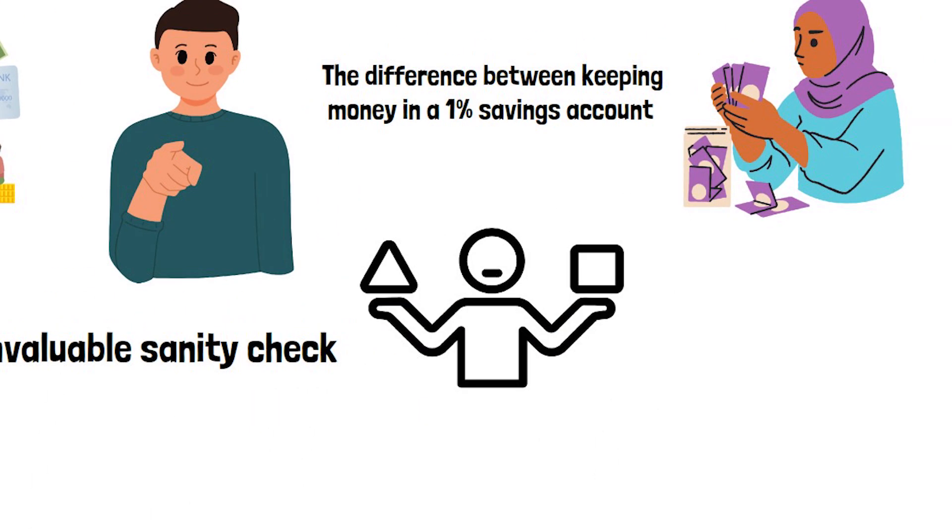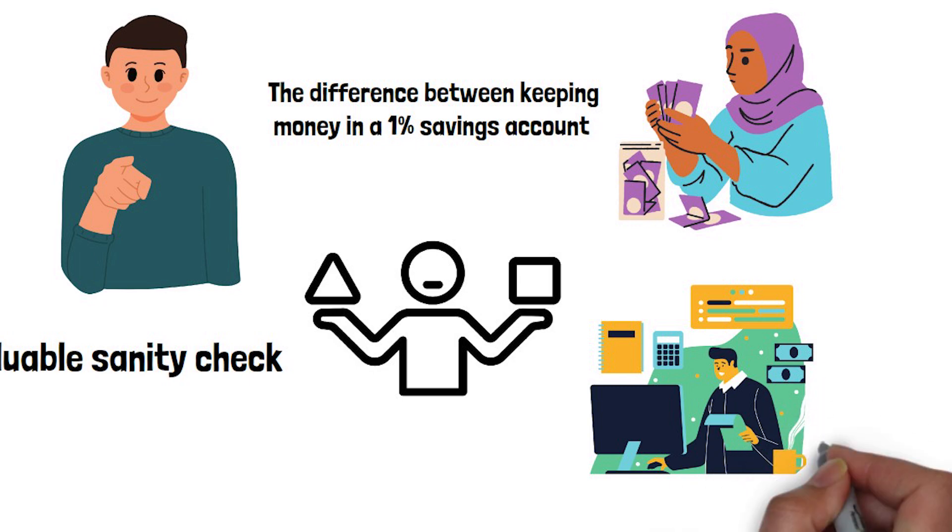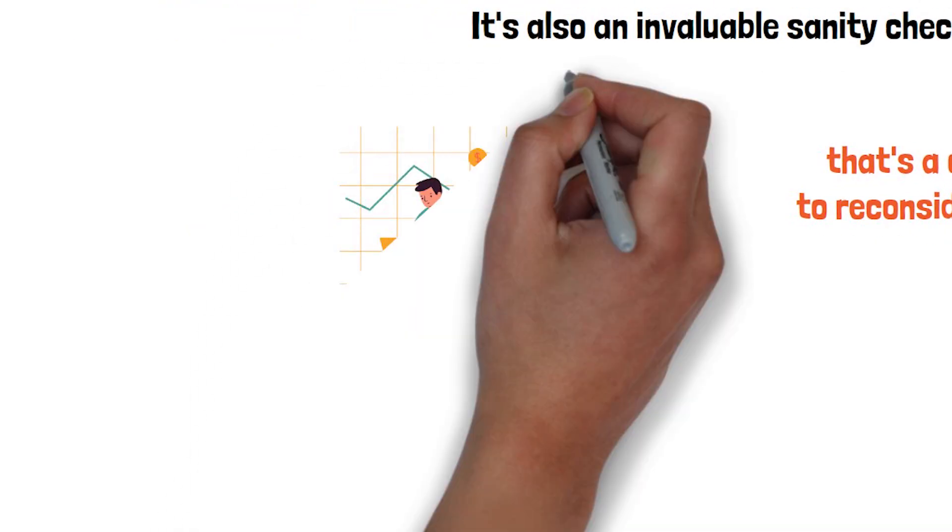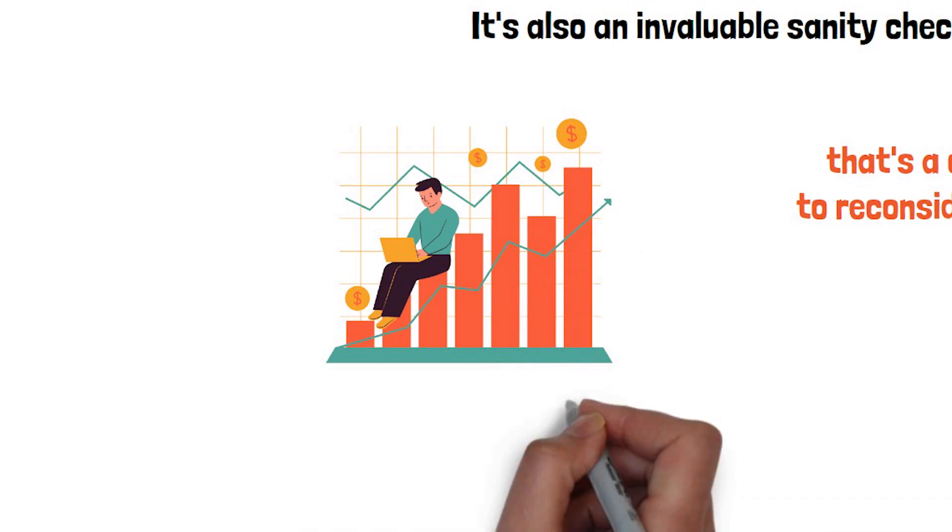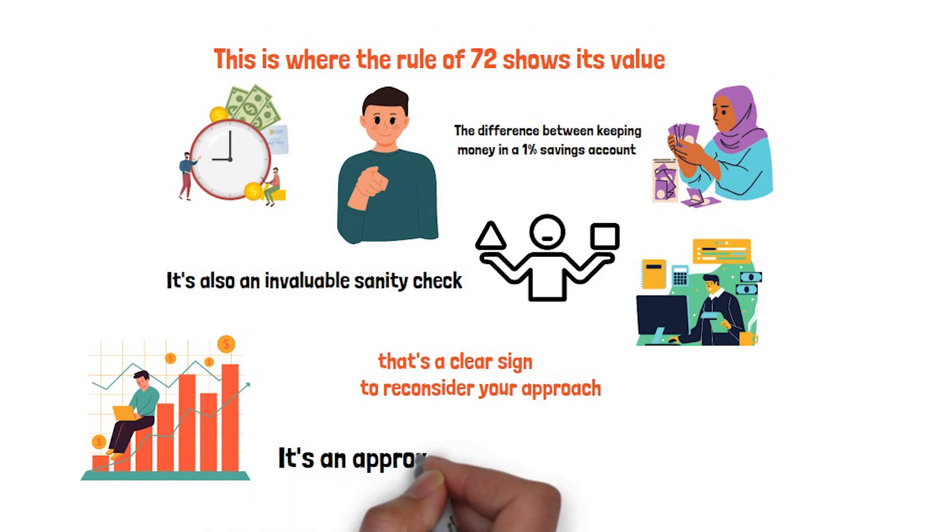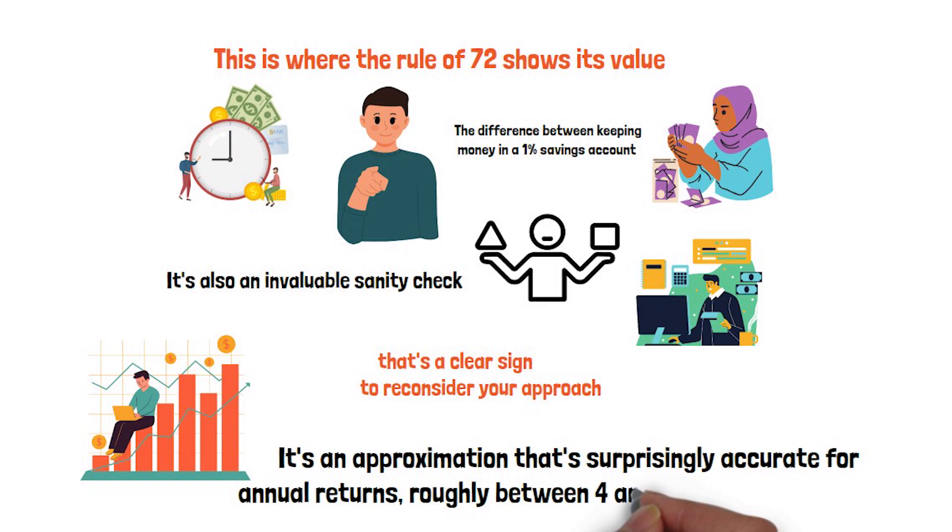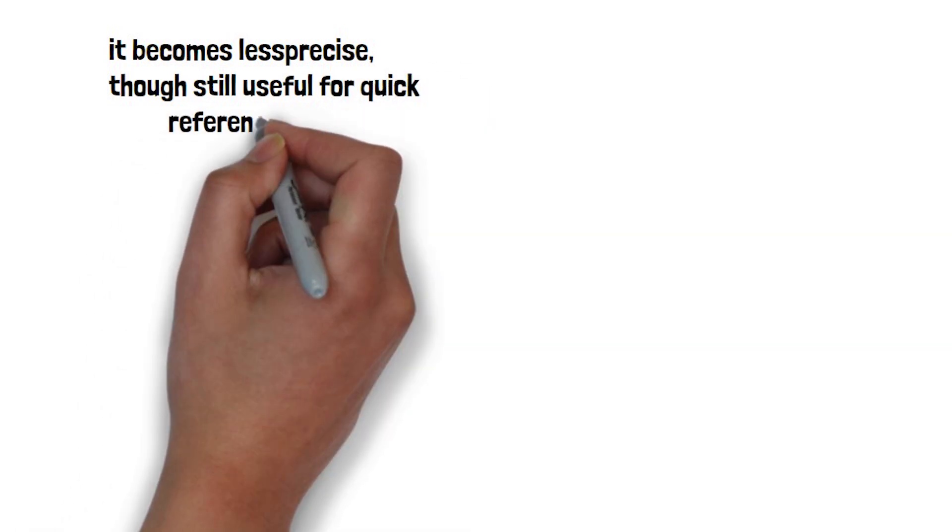If you review your portfolio and realize its implied doubling time is far beyond what your goals demand, that's a clear sign to reconsider your approach. The rule of 72 is a quick way to test whether your money is working hard enough without losing yourself in endless projections. It's worth knowing the boundaries of this shortcut. It's an approximation that's surprisingly accurate for annual returns, roughly between 4% and 15%. Outside that range, it becomes less precise, though still useful for quick reference.